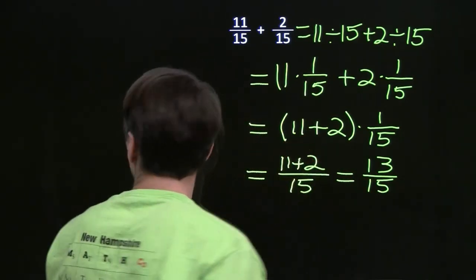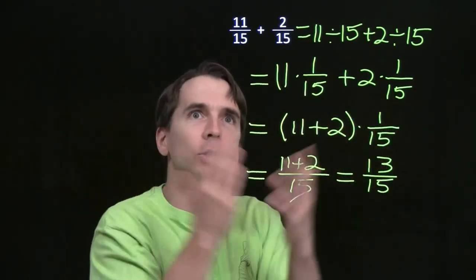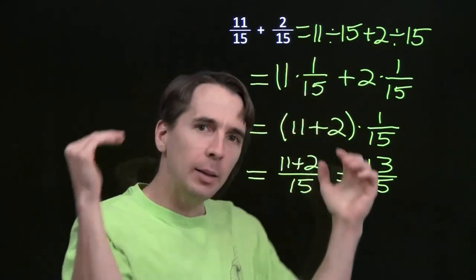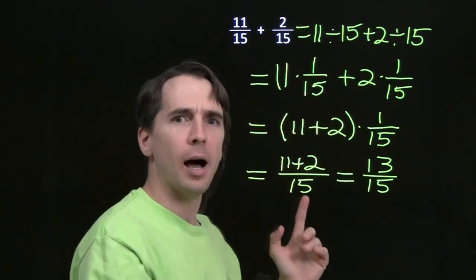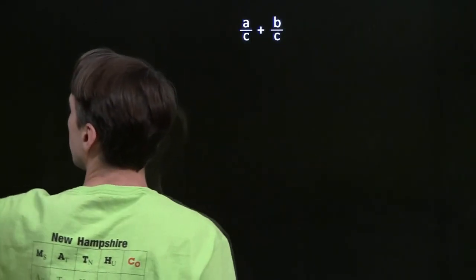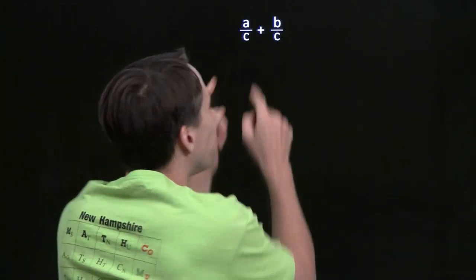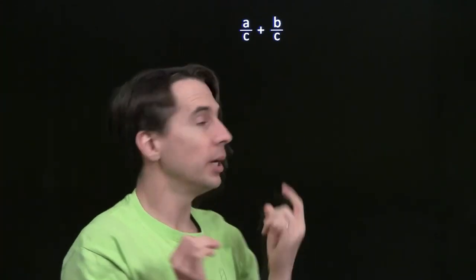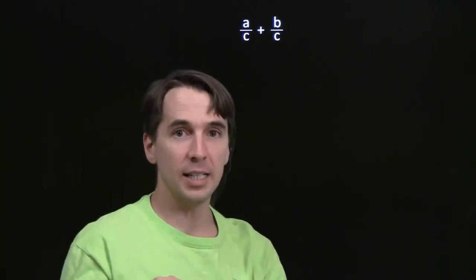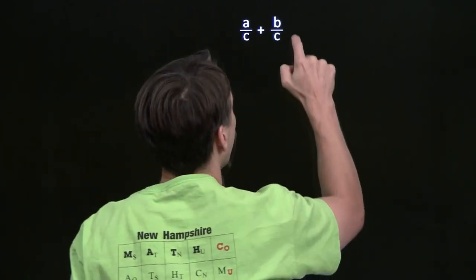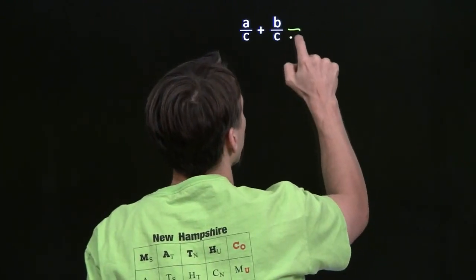The denominators are the same — that's the key here. So maybe it's when you add two fractions and the denominators are the same, you just add the tops. Let's check that out. We've got two fractions here with the same denominator — they both have c as the denominator. Let's see if we can add these by just adding the numerators.